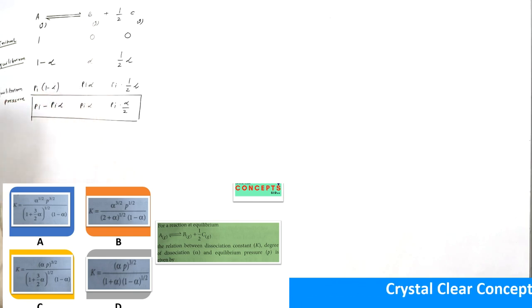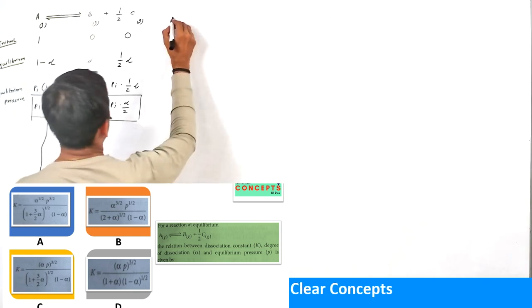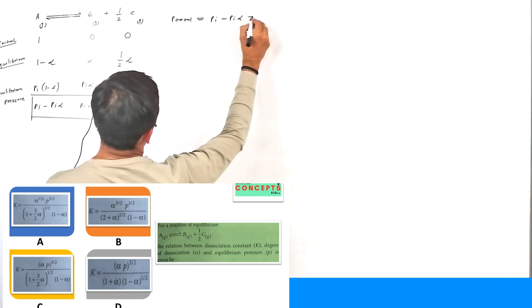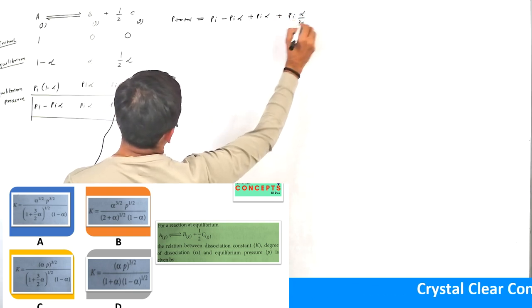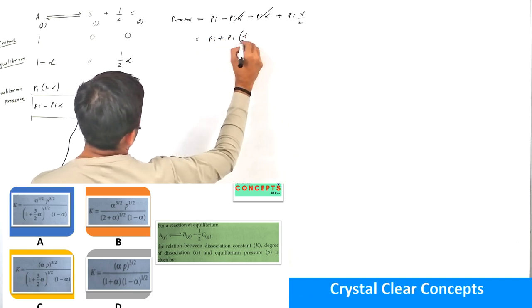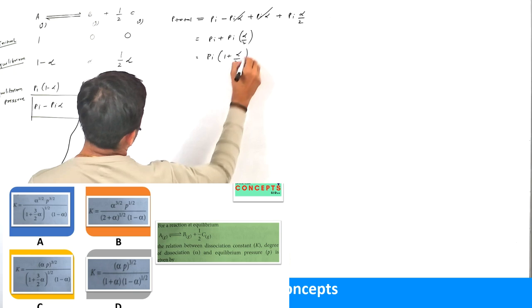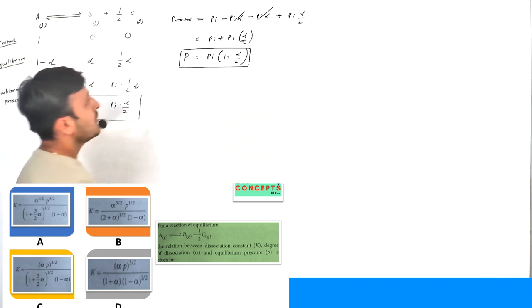If we want to find out the total pressure, P_total equals the sum of all individual pressures: (Pi - Pi·α) + Pi·α + Pi·α/2. Simplifying, this becomes Pi + Pi·α/2, which equals Pi × (1 + α/2). This is the total equilibrium pressure in the container.